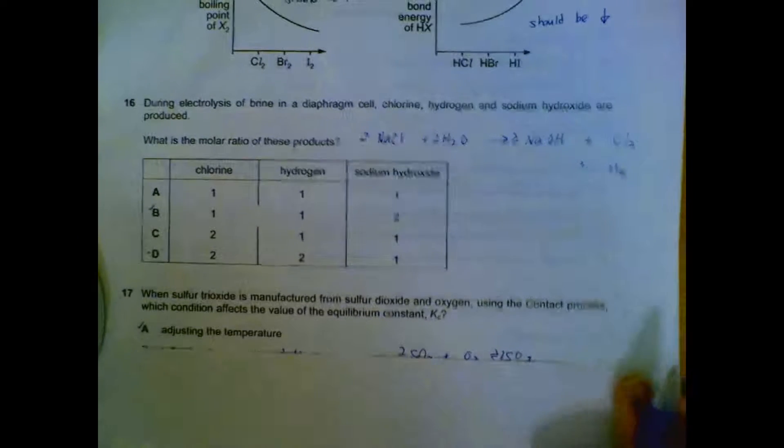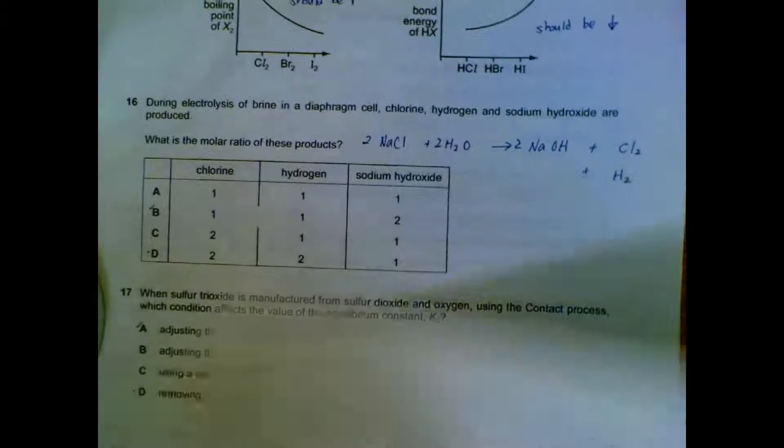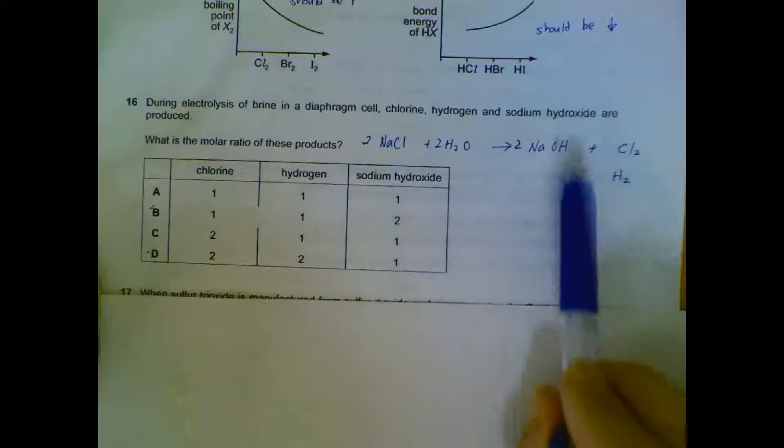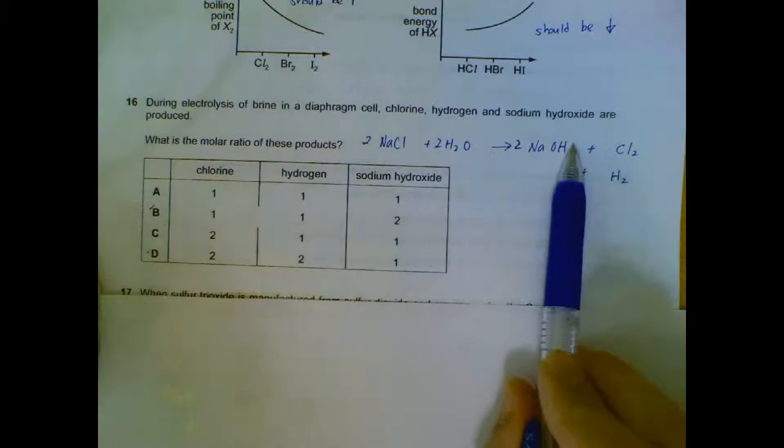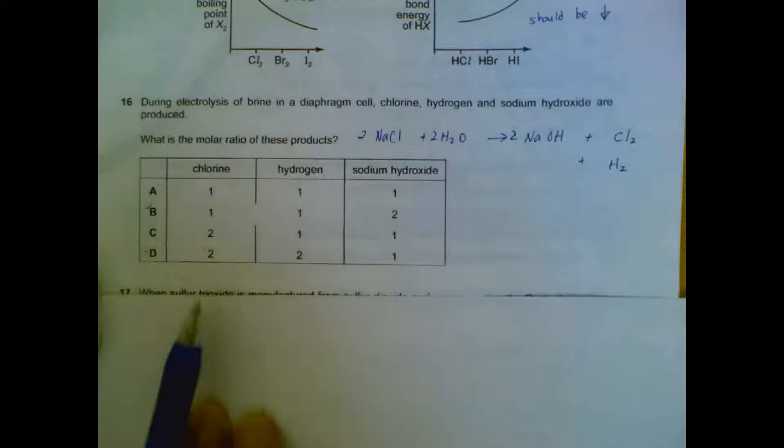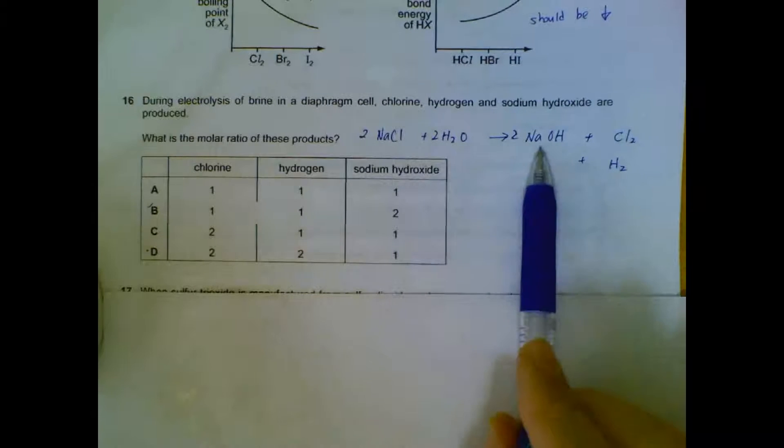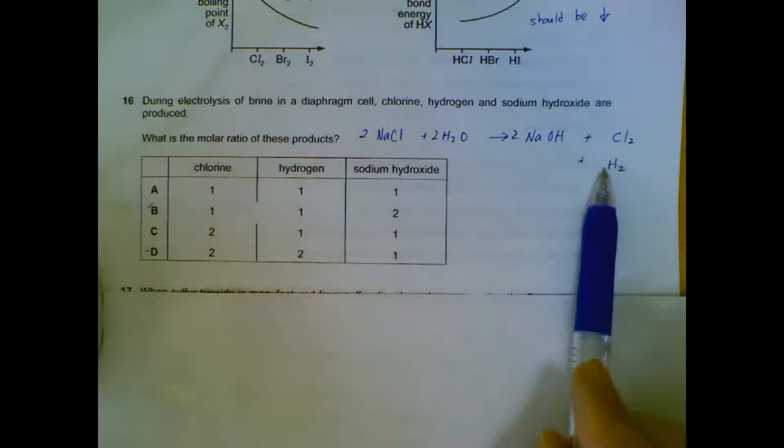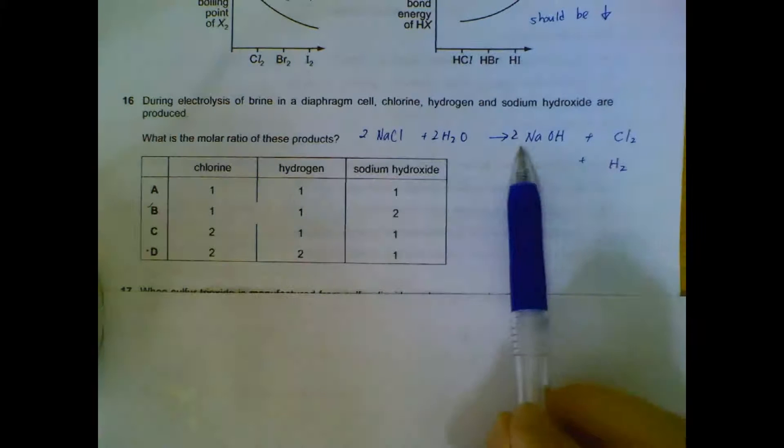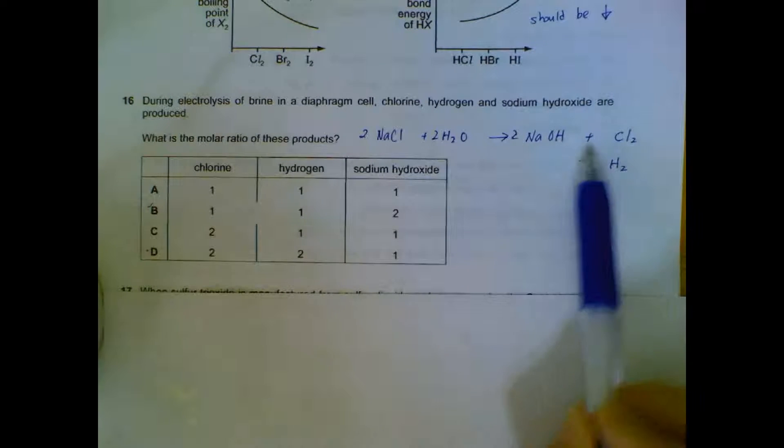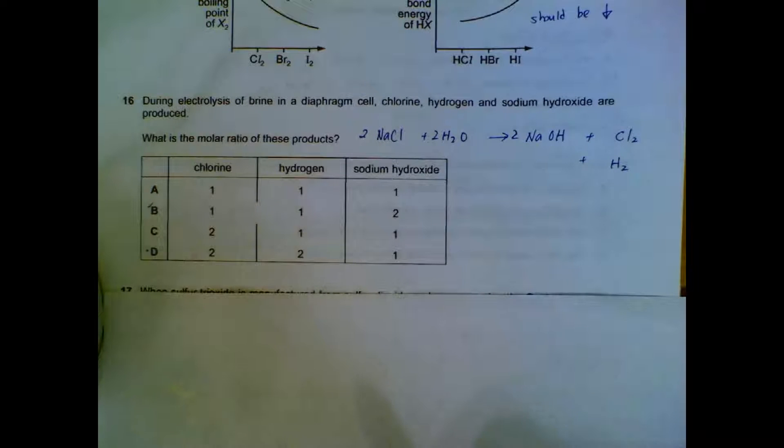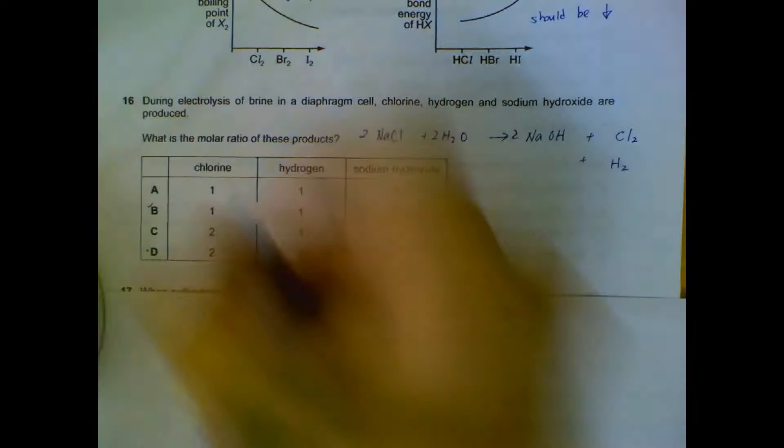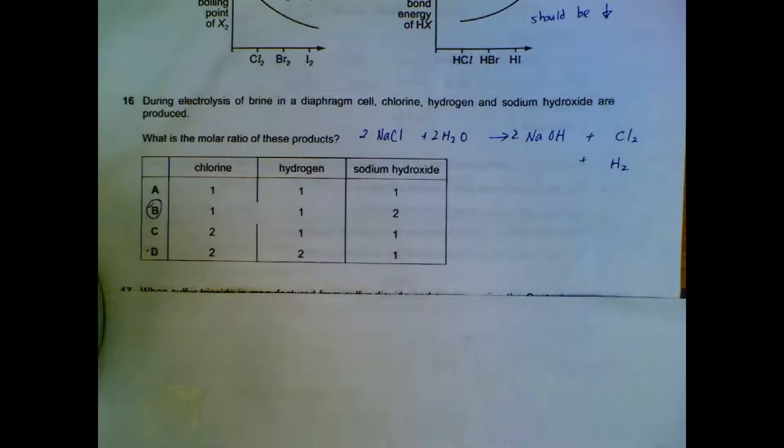Question 16, electrolysis of brine. We are given the info that we have chlorine gas, hydrogen gas, and sodium hydroxide, so we try to form an equation. Sodium hydroxide, chlorine, and hydrogen gas. And we balance it - you will see that two moles sodium hydroxide and one mole of chlorine and hydrogen each. So write out the equation and balance it, you will get your mole ratio.